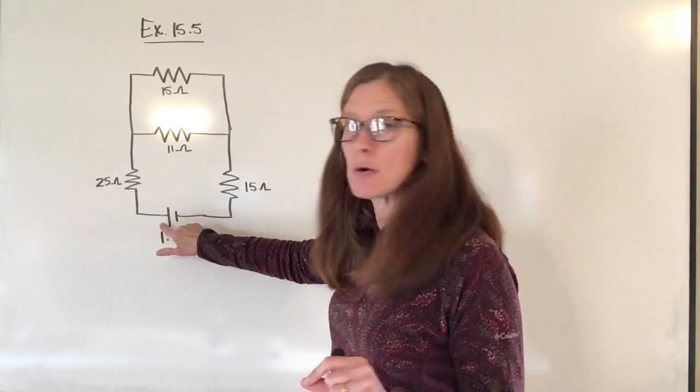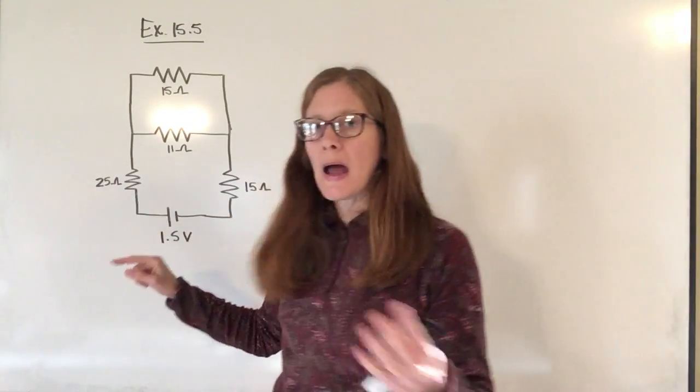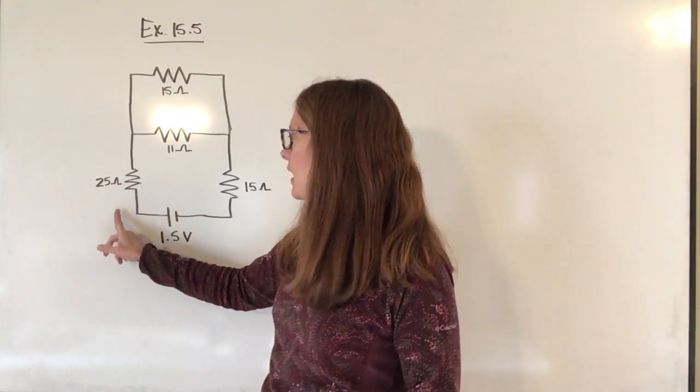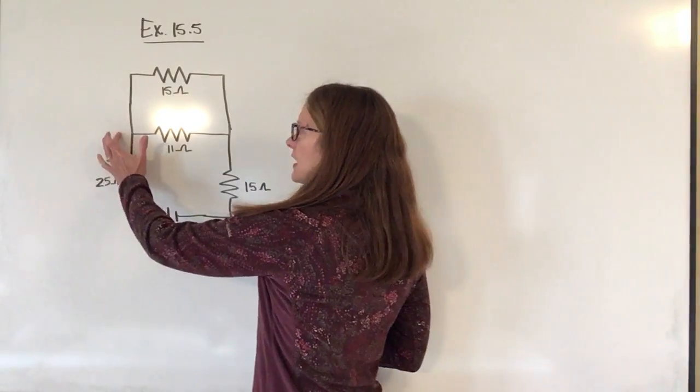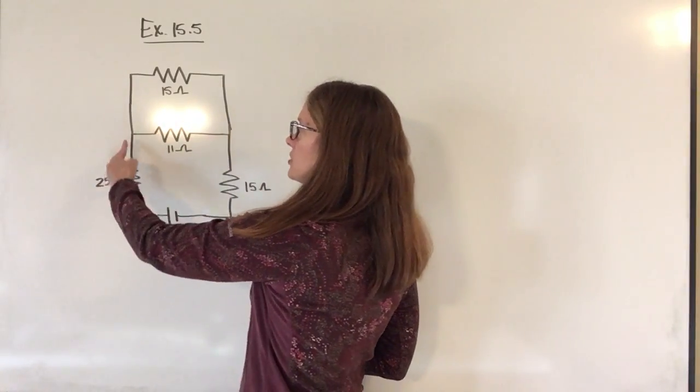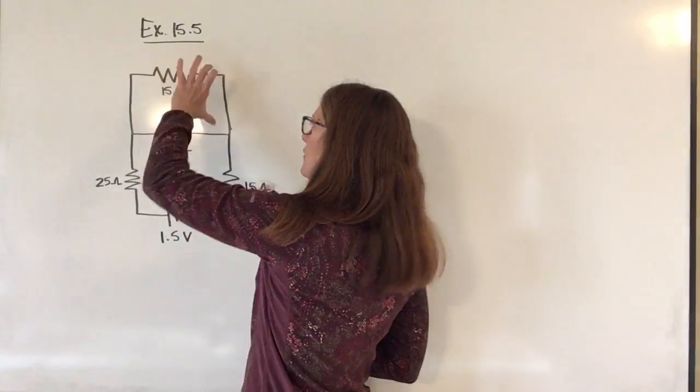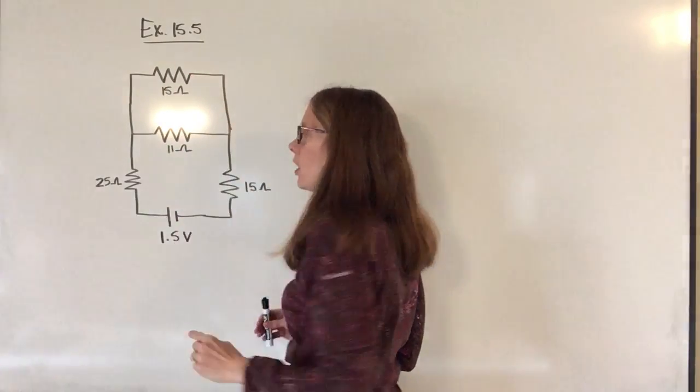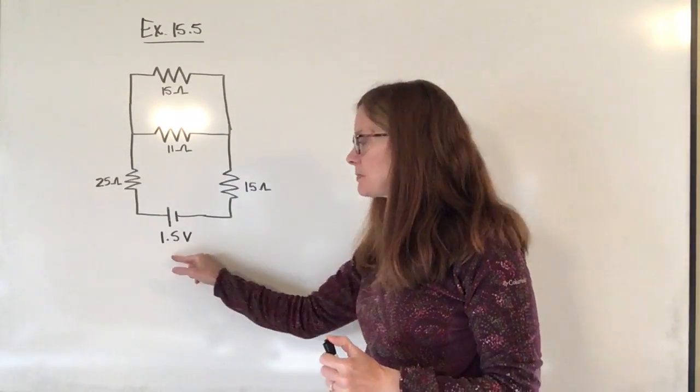So if I start here and take the path of conventional current, I'm going to go this direction with it. I can see that all of my current is going to have to go through the 25 ohm resistor. But then once it gets here, it actually has a choice. It can either go through the 11 ohm resistor or it can go up this way and it can go through the 15 ohm resistor. Then once it gets around this corner, all of the current is going to have to go through this 15 ohm resistor before it gets back around and completes the circuit.